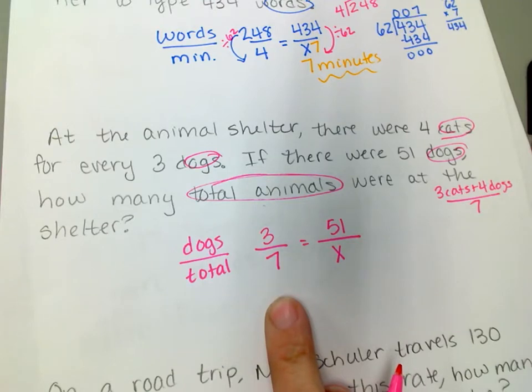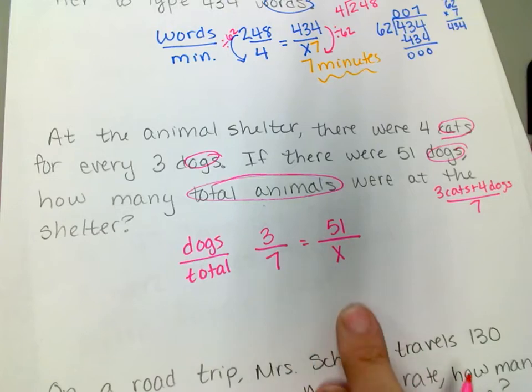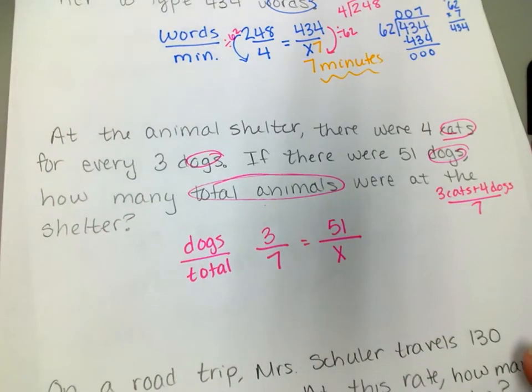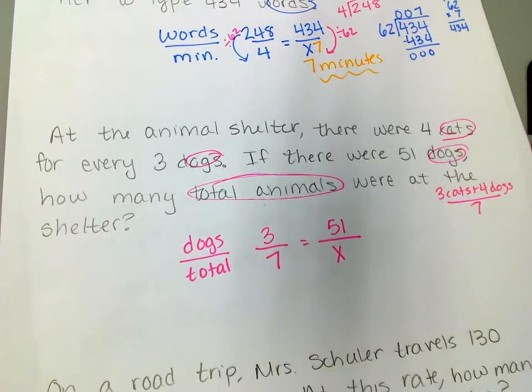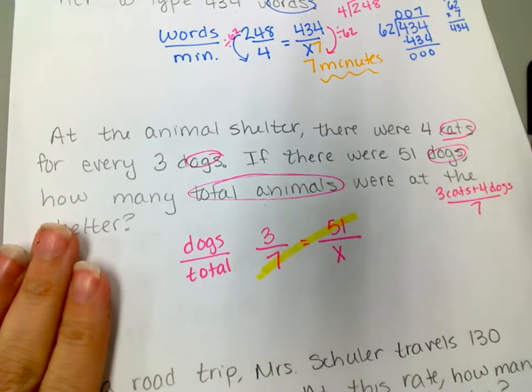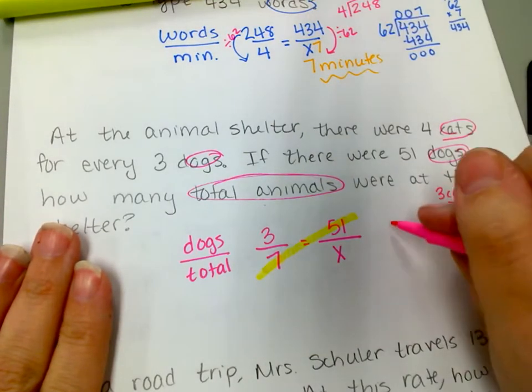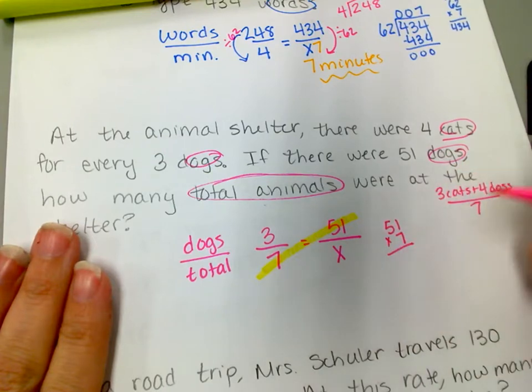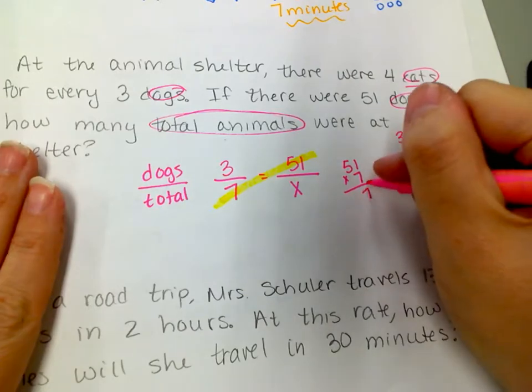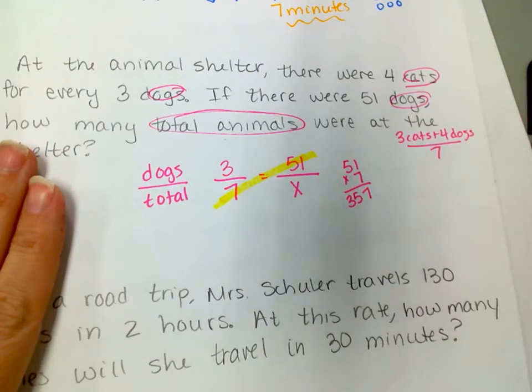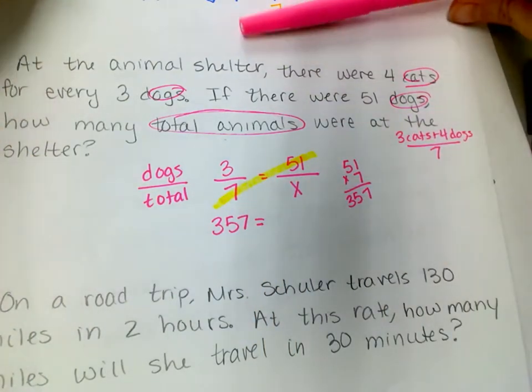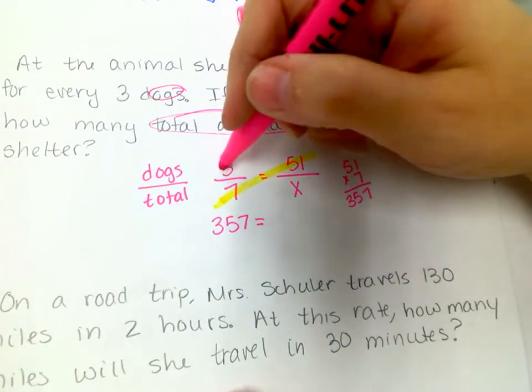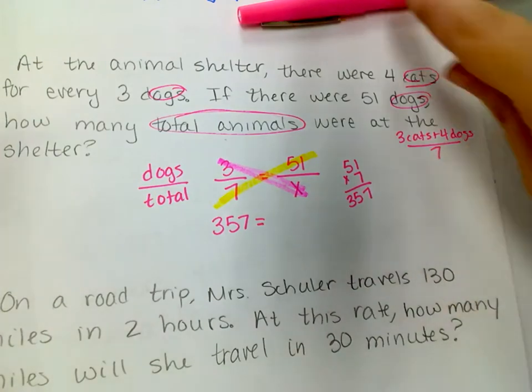So I need to see is there something I can do to solve this? Now, because I want to show you cross products, we're going to do cross products for this one, but it doesn't matter which way you do. You might want to do 51 divided by 3 and then multiply that, but I just want to show you something different. So I'm going to start with 51 times 7. 7 times 1 is 7, 7 times 5 is 35. So that's 357 equals 3 times x is just 3x.